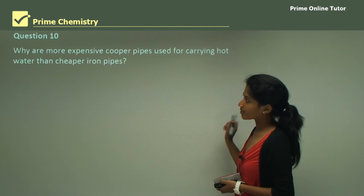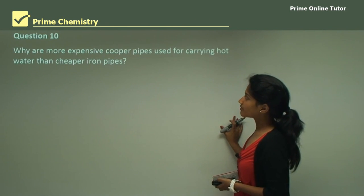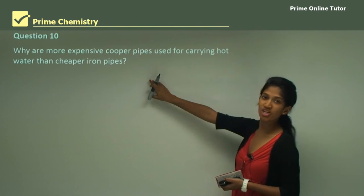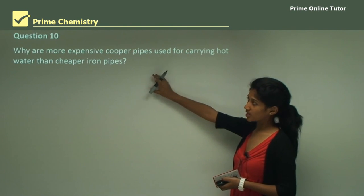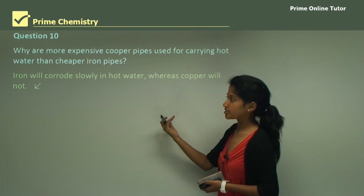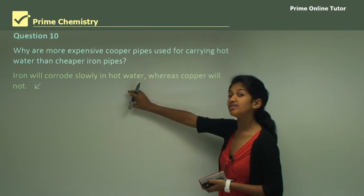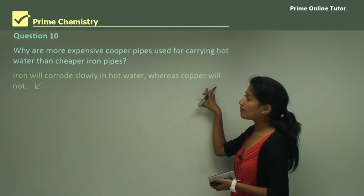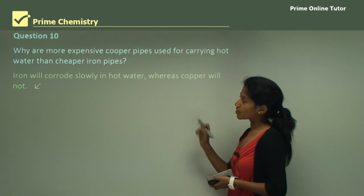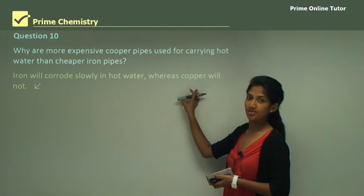Question 10. Why are more expensive copper pipes used for carrying hot water than cheaper iron pipes? You just have to simply give a reason. Iron will corrode slowly in hot water. We know that iron is quite reactive with water, whereas copper will not because copper is corrosion resistant. So this is our answer and it's quite simple.